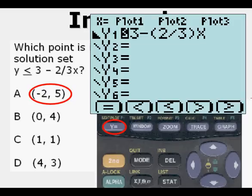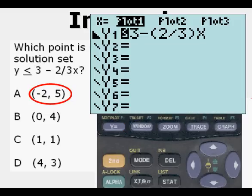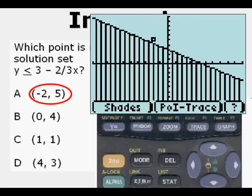We can go to the stat edit view and enter this point negative 2 comma 5. We go back to Y equals. Make sure that Plot 1 is highlighted. Then we can graph, and we see the point negative 2 comma 5 above the boundary line. So not on the line, let alone inside the shaded area. Therefore, that point is not part of the solution set. We cross it out.